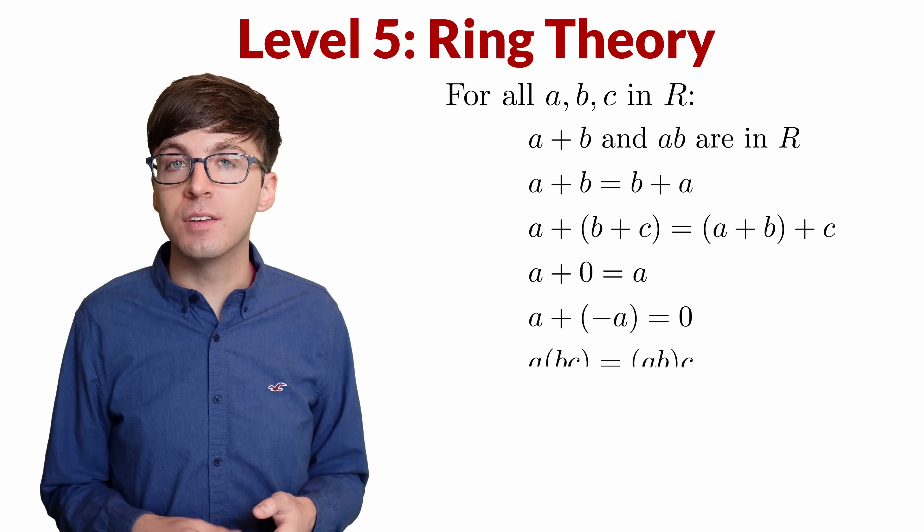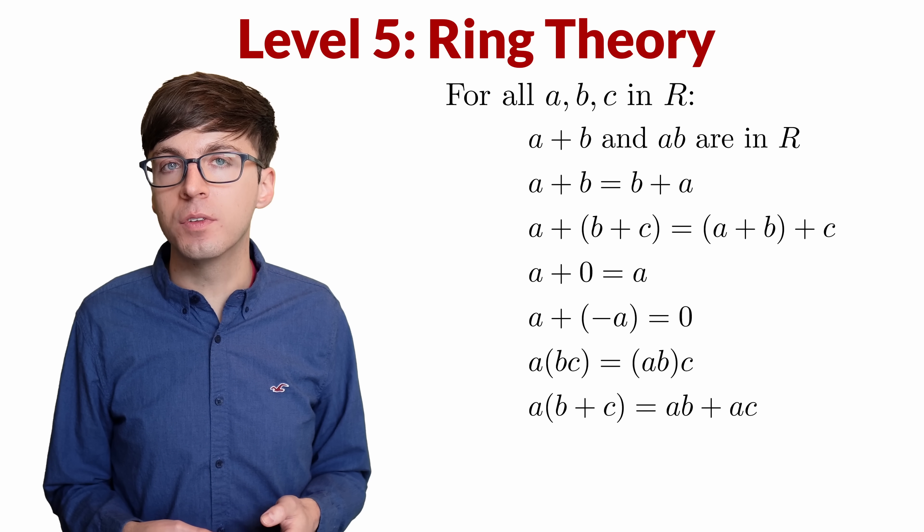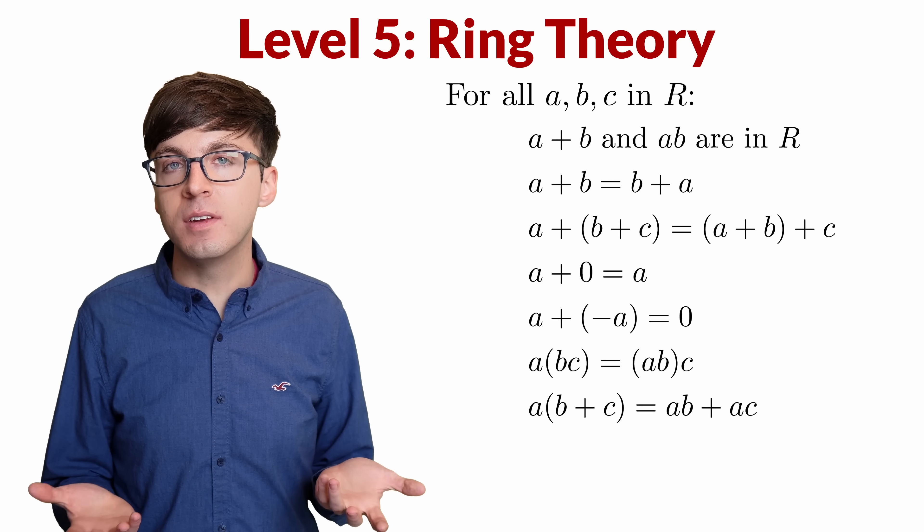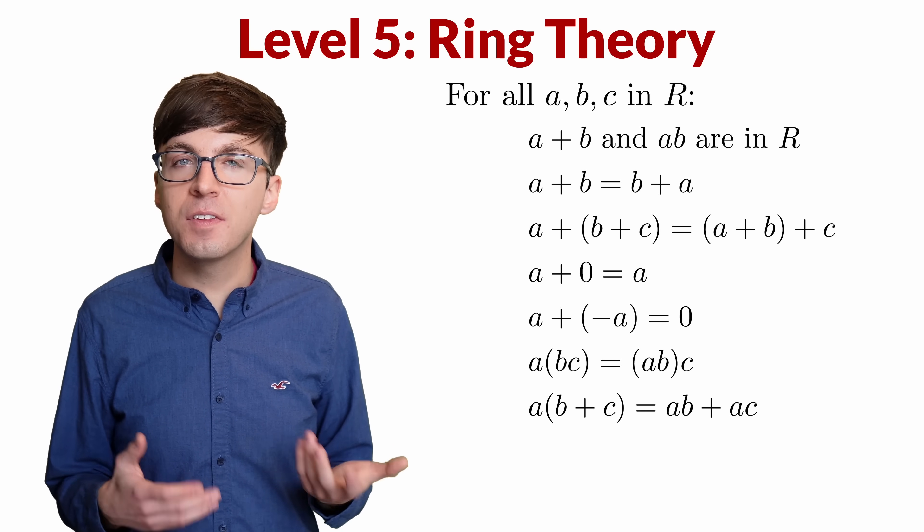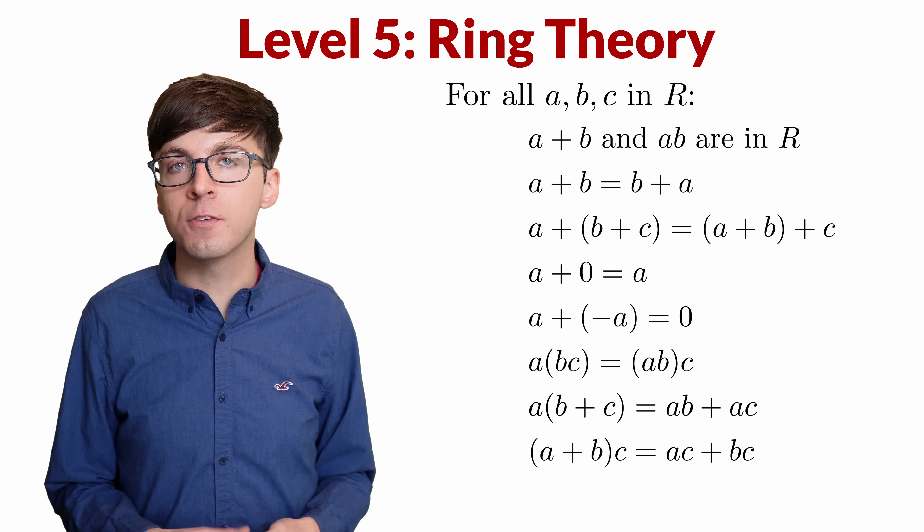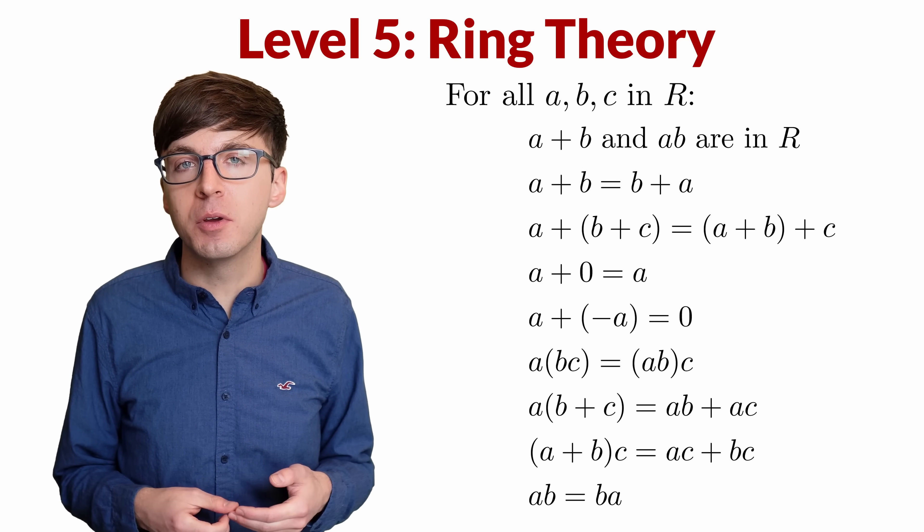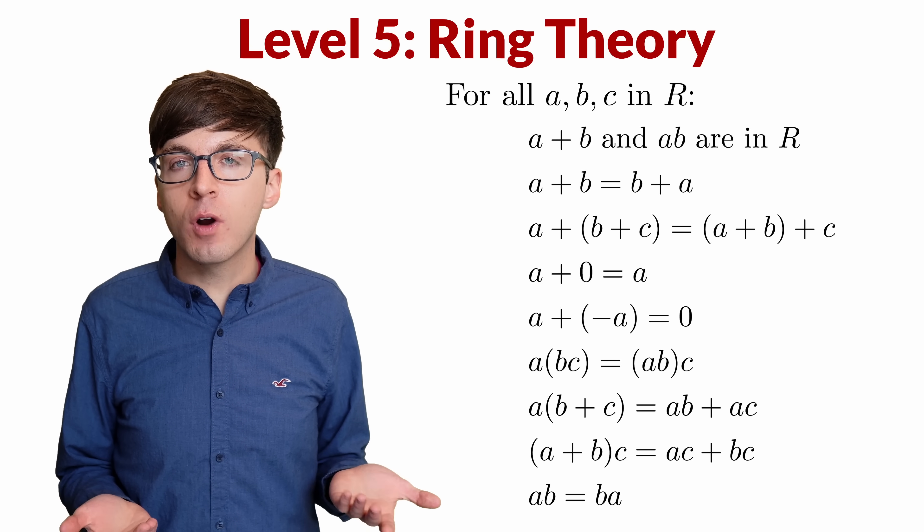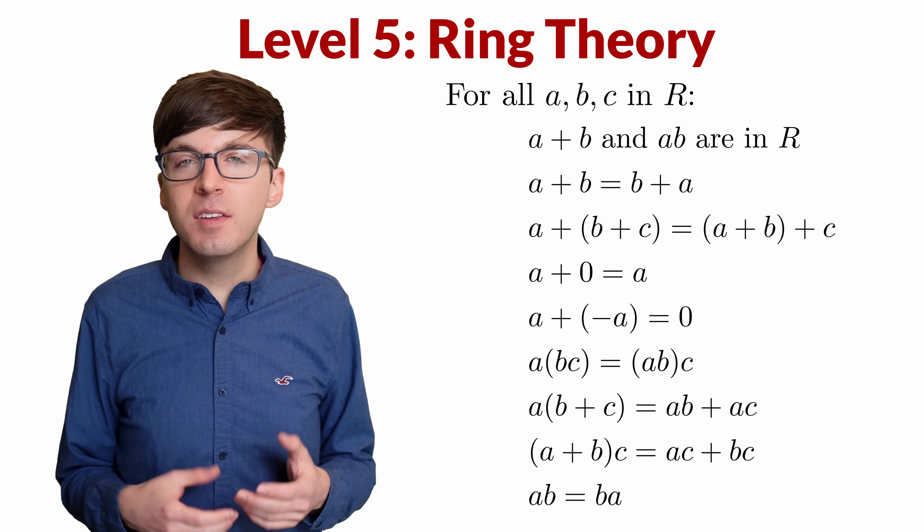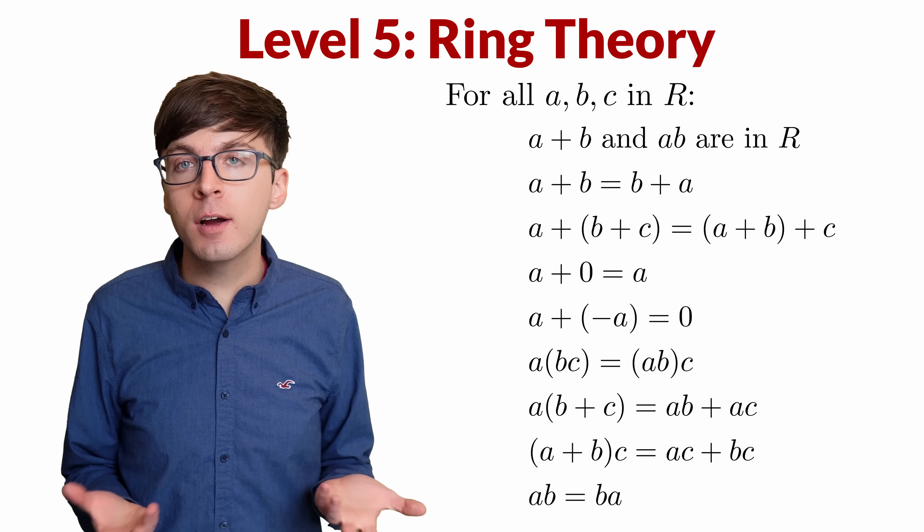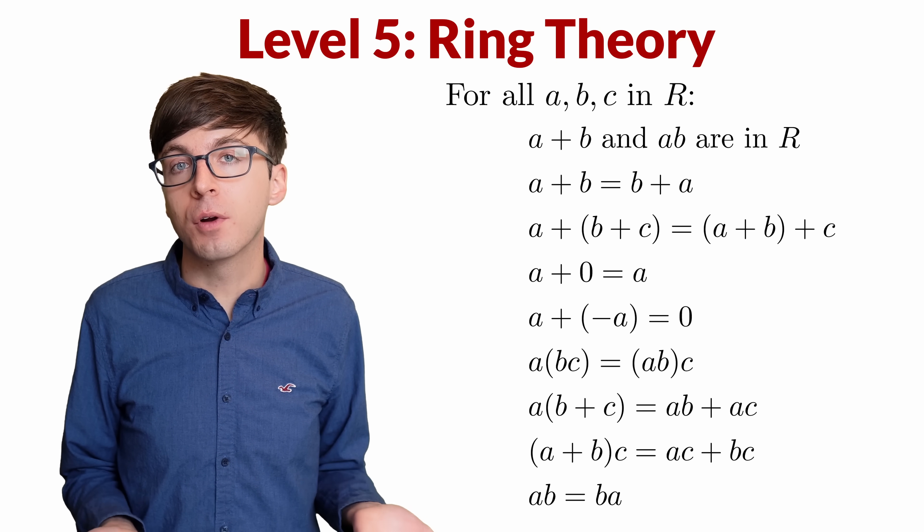Next, multiplication is associative, and lastly, the distributive property holds. A times (b plus c) is equal to ab plus ac. And the same property holds with the multiplication in the other order. Just for convenience, let's also assume that multiplication is commutative. This extra requirement gives us a special type of ring called a commutative ring. This isn't necessary, and if you want, you can make some very small tweaks to our proof to make it work for any ring.